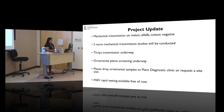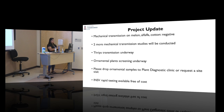Two more mechanical transmission trials will be done to confirm results, followed by thrips transmission trials. If both are negative, combined with field survey data, we can be confident these crops are not hosts. Ornamental plants will also be tested — anyone with ornamentals showing potential virus symptoms can contact the lab for sample collection and testing. Plants from nurseries, Home Depot, and Lowe's will also be tested.